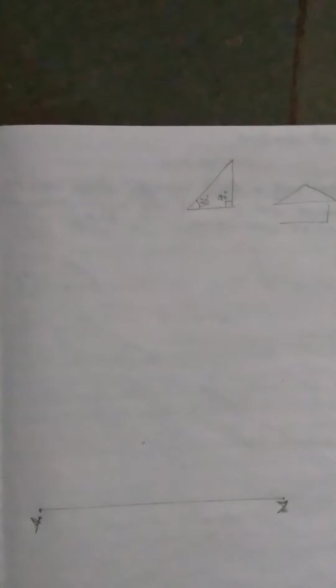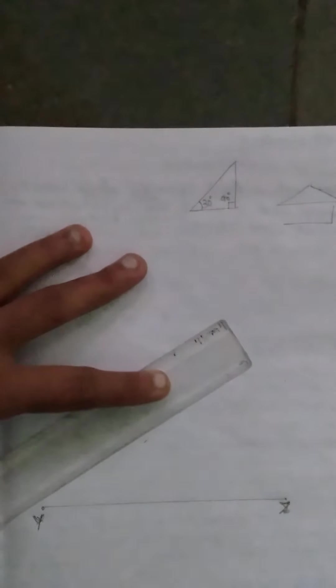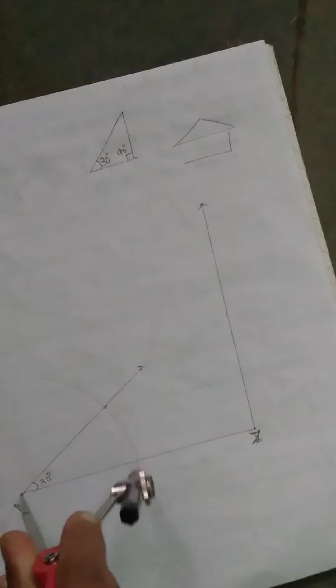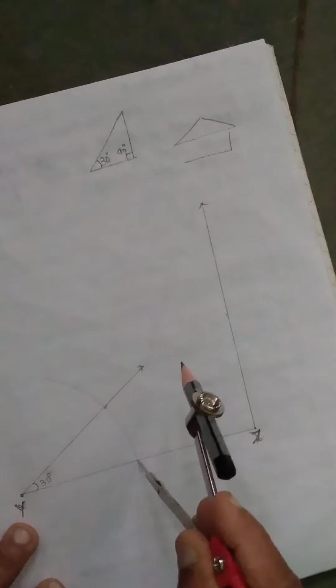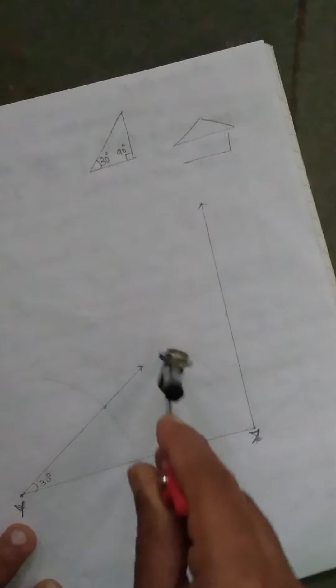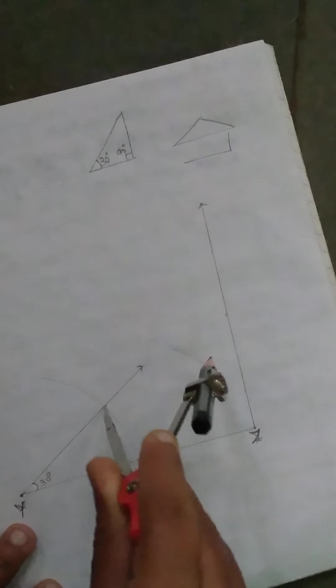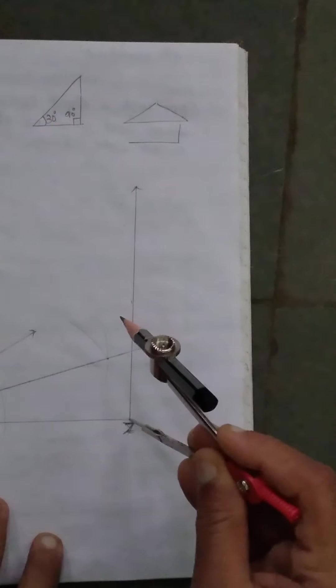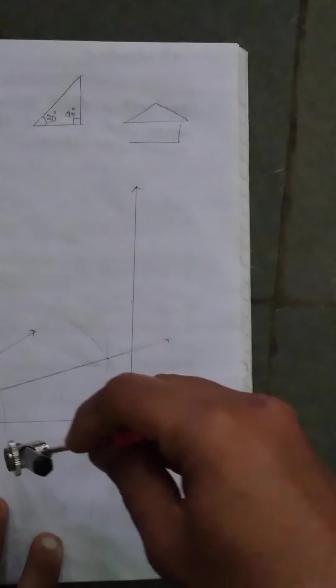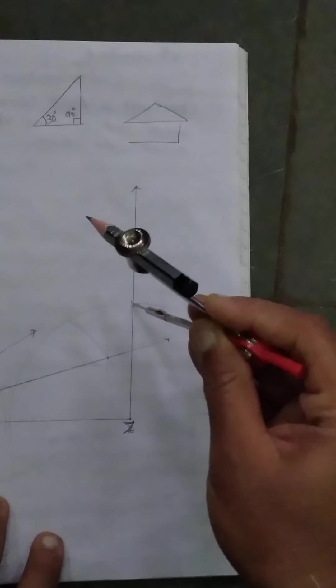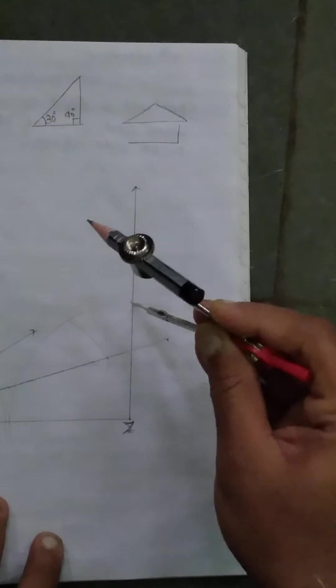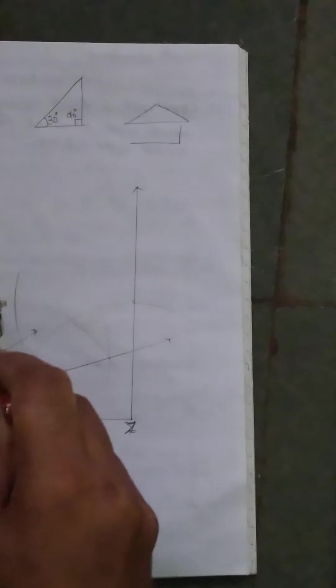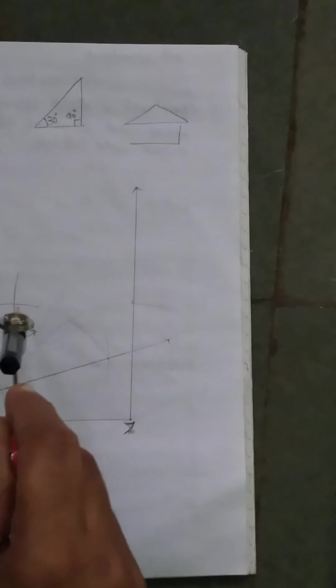Draw a line and join that. Next bisect this 30 degree by drawing an arc. We will get 15 degree. And bisect this angle 90 degree. You will get 45 degree. Find that line.